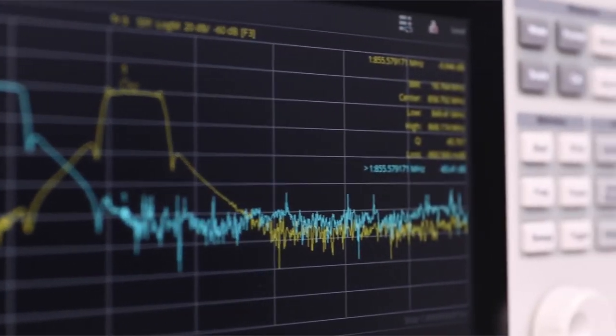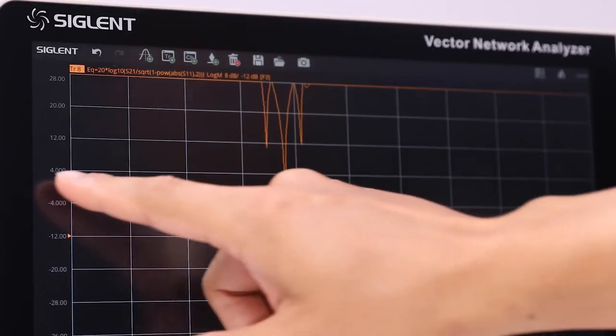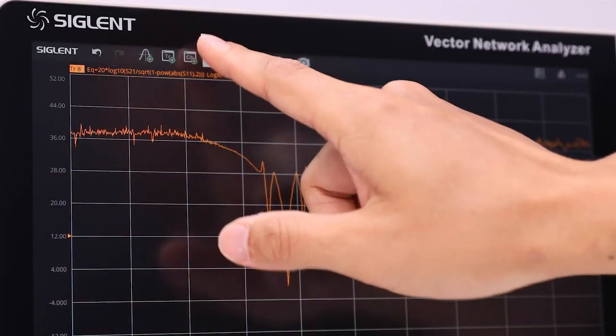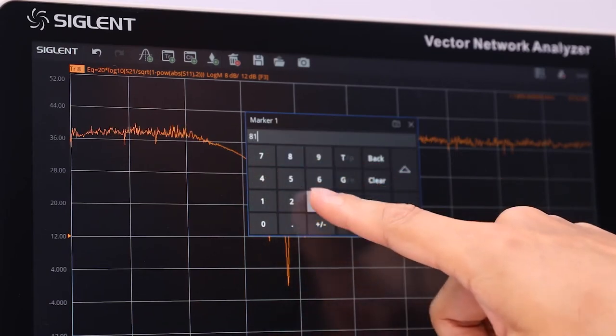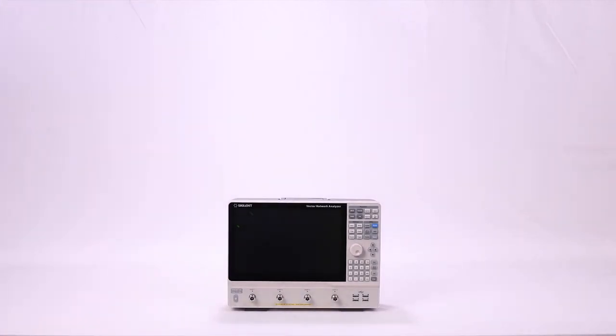The Siglent SNA 5000A VNA design is focused on being compact but user-friendly. It features a 12.1 inch large touchscreen and user interface in a small footprint that makes it easy to use on the desktop and just as easy to move around the lab.